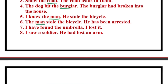Number seven: 'I have found the umbrella / I lost it' — non-living thing: 'I have found the umbrella that I had lost.' Number eight: 'I saw a soldier / He had lost an arm' — living thing: 'I saw a soldier who had lost an arm.' Clear. I guess you have got eight out of eight in this exercise.